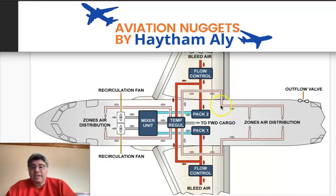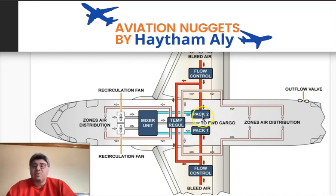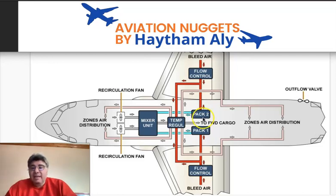The air conditioning system in the Airbus A320 depends on two air conditioning packs: PACK 1 and PACK 2. These are called air conditioning packs, and each pack is basically an air cycle machine.